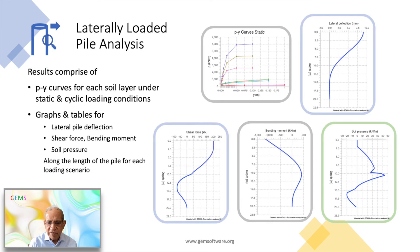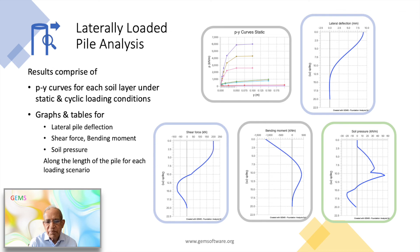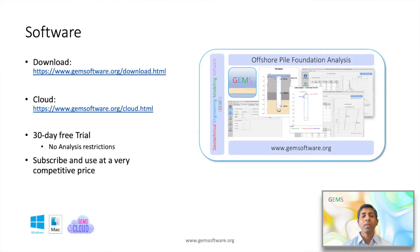The results of the lateral analysis are presented in two parts. The first part consists of a set of PY curves for each soil layer under static loading conditions and under cyclic loading conditions. For each loading case, the second part results consist of lateral deflection and slope diagrams of the pile, shear force, bending moment, and soil pressure diagrams of the pile.